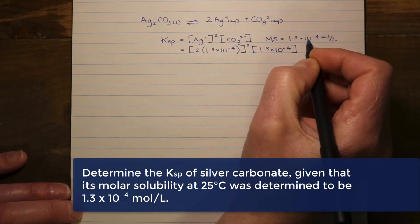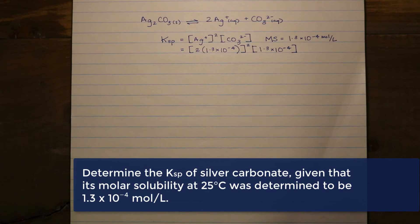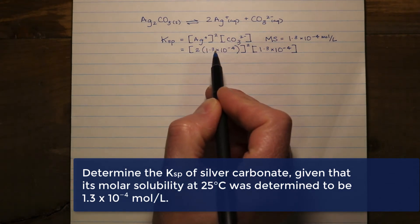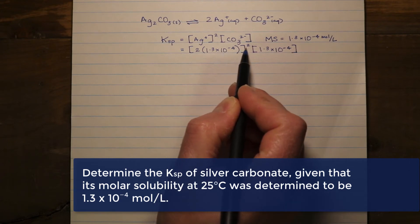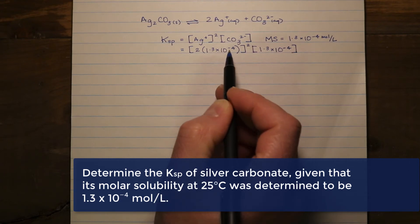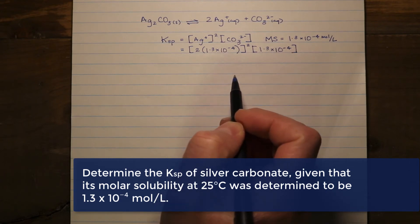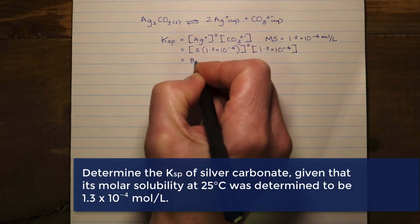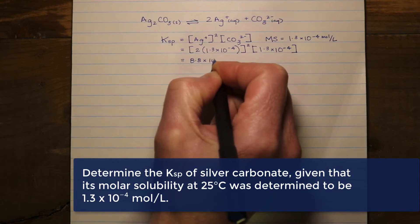When you're going through this calculation, you're going to have to, for silver, multiply the two times the 1.3 times 10 to the negative 4, and then square the entire thing in the brackets before multiplying it by 1.3 times 10 to the negative 4 of the carbonate ion. And when we do that, what we find is we get a value of 8.8 times 10 to the negative 12.